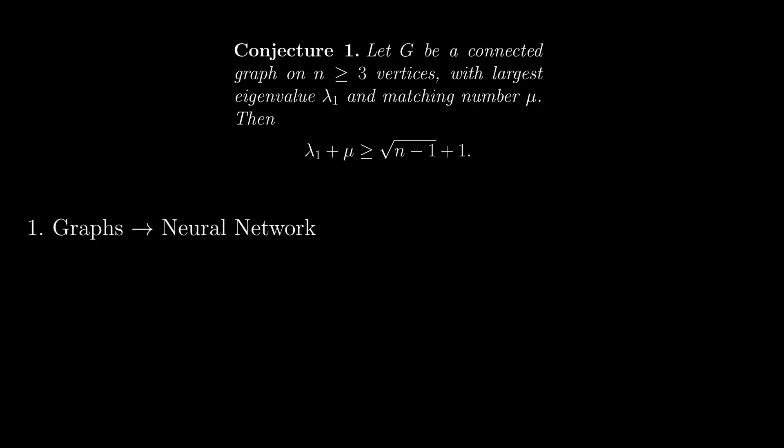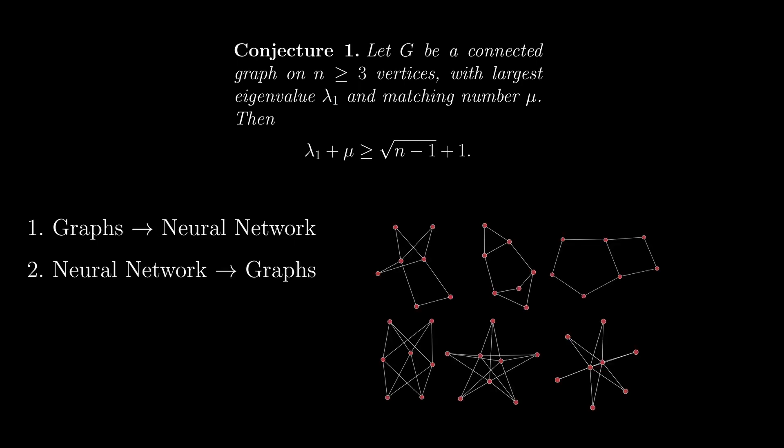Essentially, what this technique does is it trains a neural net on some graphs to predict how to build a graph for the problem. Then it builds graphs that it predicts are likely to be counterexamples to the conjecture. It makes a ton of these, and then it computes which ones were actually closest to disproving the conjecture. And then it retrains the neural net based off of those graphs.